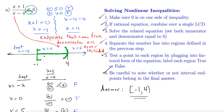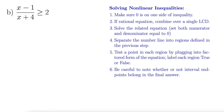Let's try another one. Here we have x minus one over x plus four greater than or equal to two — a rational inequality, a nonlinear inequality. Step one: make sure zero is on one side. We don't have that yet, so we subtract two from both sides. This gives us x minus one over x plus four minus two greater than or equal to zero.